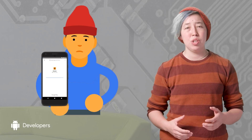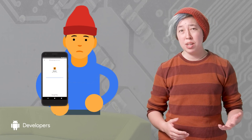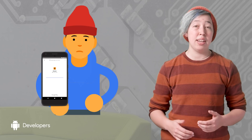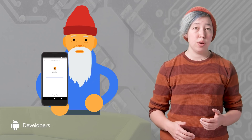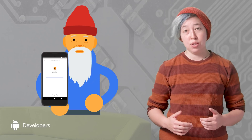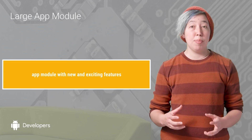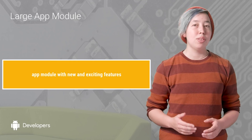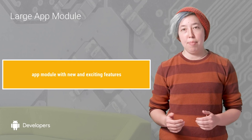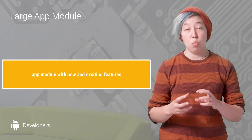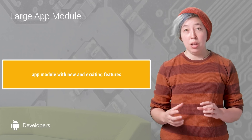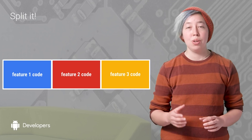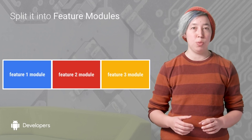Now, you haven't really taken the friction out of the app experience if your users will spend the same amount of time staring at that Instant Apps splash screen that they would have spent looking at the installing screen. So Instant Apps enable you to keep all of the features that your users love, but download them one at a time. To do this, you need to take that one big app module and split it into smaller modules called feature modules.